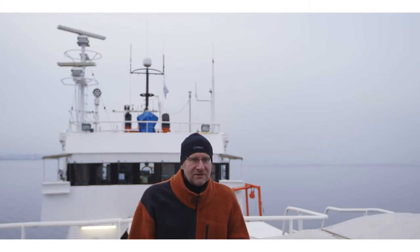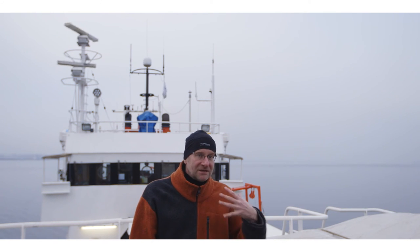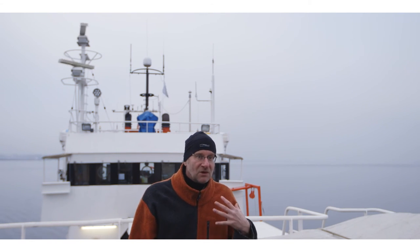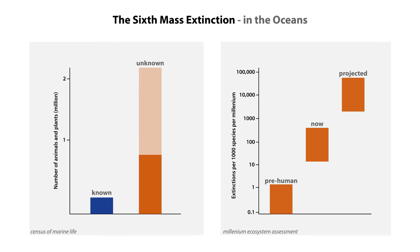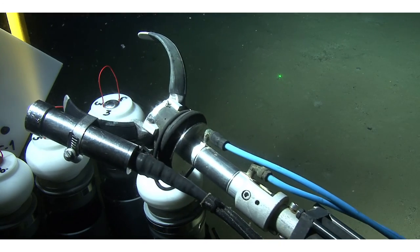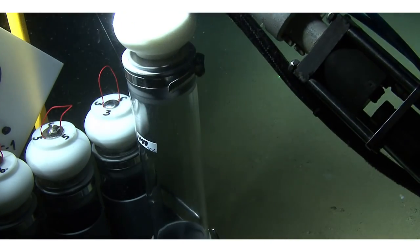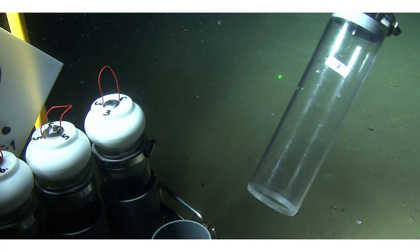Against the background of our ignorance — we only know less than a fifth of all species — what we're probably facing right now is a sixth mass extinction, also in the oceans. We know the rates of enhanced extinction in terrestrial systems quite well: they are about 100 to 1,000 times above the geological average. We expect the same in the oceans, but our ignorance prevents us from having good estimates. This is a clear message that science must do more to develop species inventories and monitor changes in species diversity.